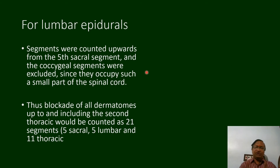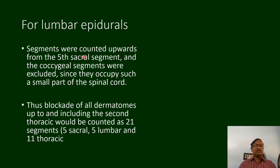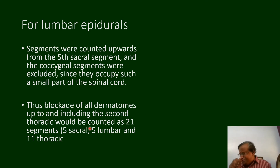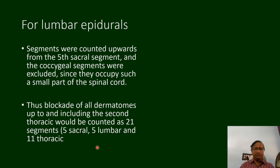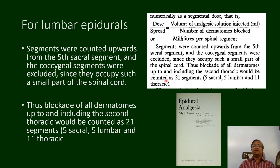How many segments do you have to block? For lumbar epidurals, segments are counted from the fifth sacral segment — coccygeal segments are excluded. Blockade of all segments up to T2 would be counted as 21 segments: 5 sacral, 5 lumbar, and 11 thoracic. This is from the GC I passed in March — segments are counted according to this established method.